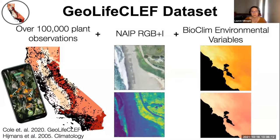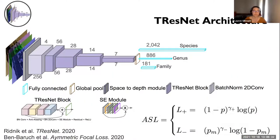We take around 100,000 plant observations from across California, paired with high-resolution RGB infrared satellite imagery data, with the goal of predicting plant community composition at 250-meter resolution across California from presence-only data. We use the GeoLifeCLEF dataset, which pairs around 100,000 plant species observations from across California with high-resolution satellite imagery from the NAIP aerial imagery program, and standard Bioclim environmental variables. We split the dataset into training and test sets. We use a new architecture called TResNet, designed specifically for multi-label image recognition, where instead of predicting just one class at a time — like is it a dog or a cat — you can predict multiple classes simultaneously.